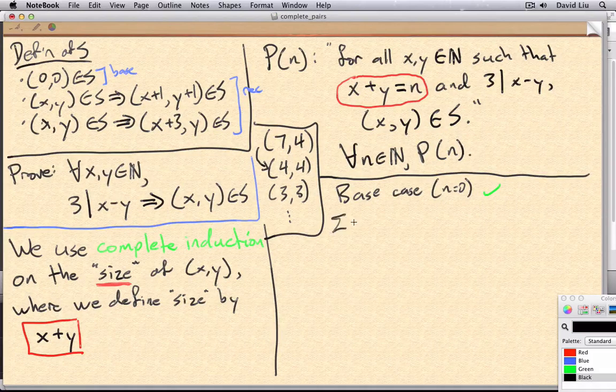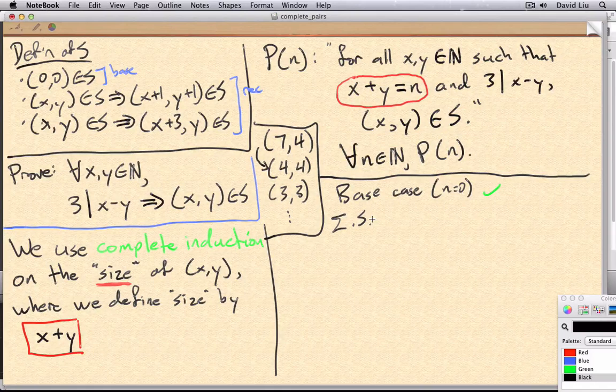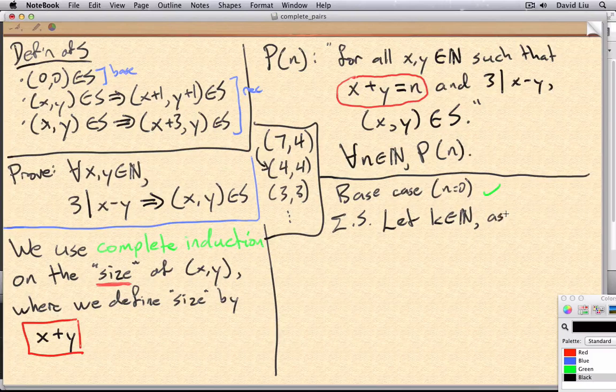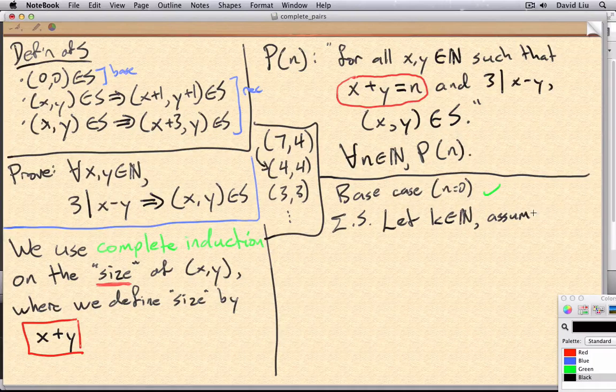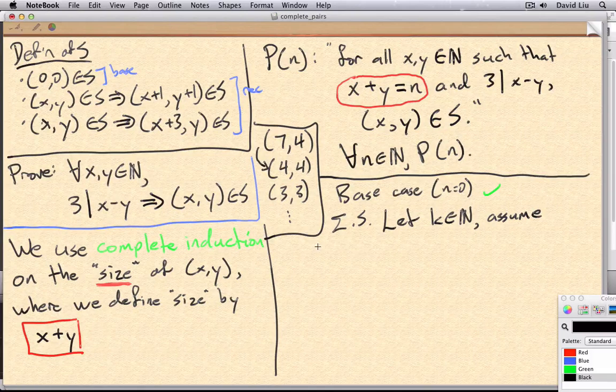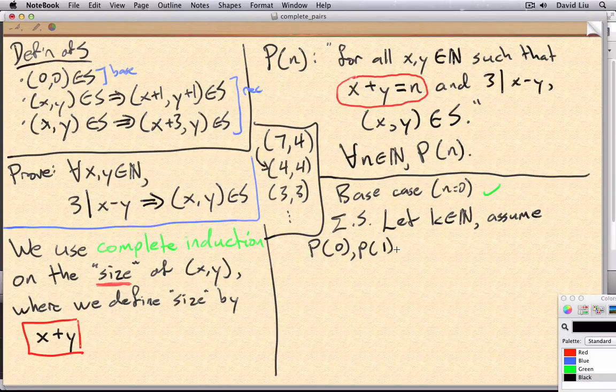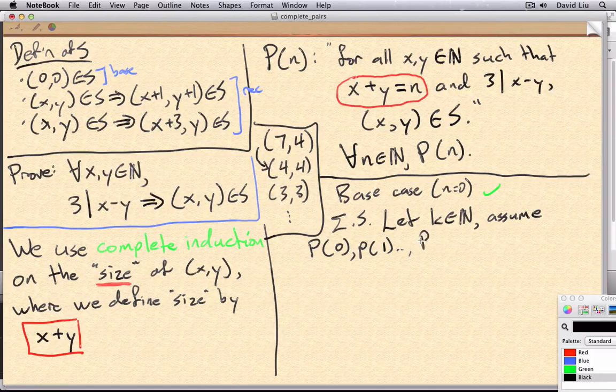For the induction step, we do the same old thing. We let k be some natural number. And we use the induction hypothesis for complete induction, which is assuming p of 0, p of 1, all through p of k.